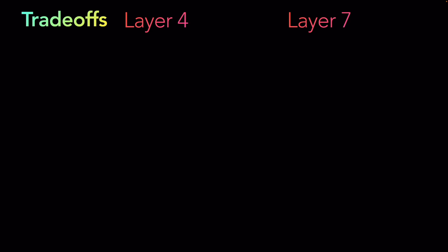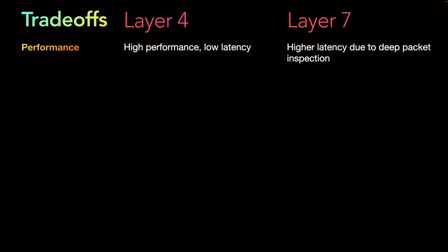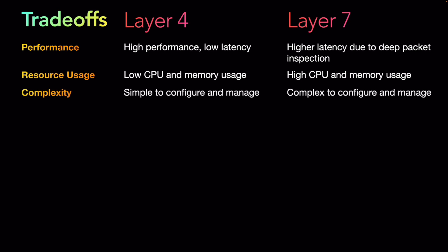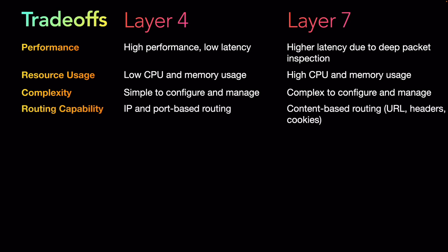Looking at the trade-offs: in terms of performance, Layer 4 is high performance with low latency, while Layer 7 has higher latency due to deep packet inspection required to examine message content before making routing decisions. For resource usage, Layer 4 has low CPU and memory usage, whereas Layer 7 requires high CPU and memory for the same reason. In terms of complexity, Layer 4 is simple to configure and manage, while Layer 7 is more complex.